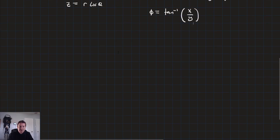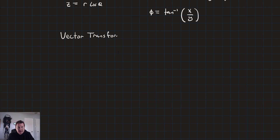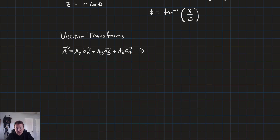The vector transformations are exactly the same as they were in cylindrical coordinates because the nature of these vector mechanics hasn't changed. We're going to use the same structures. Imagine that we have a vector A in rectangular coordinates — it's got an X component times the X unit vector, plus a Y component times the Y unit vector, plus a Z component times the Z unit vector — and we want to convert that to an R component, a theta component, and a phi component.